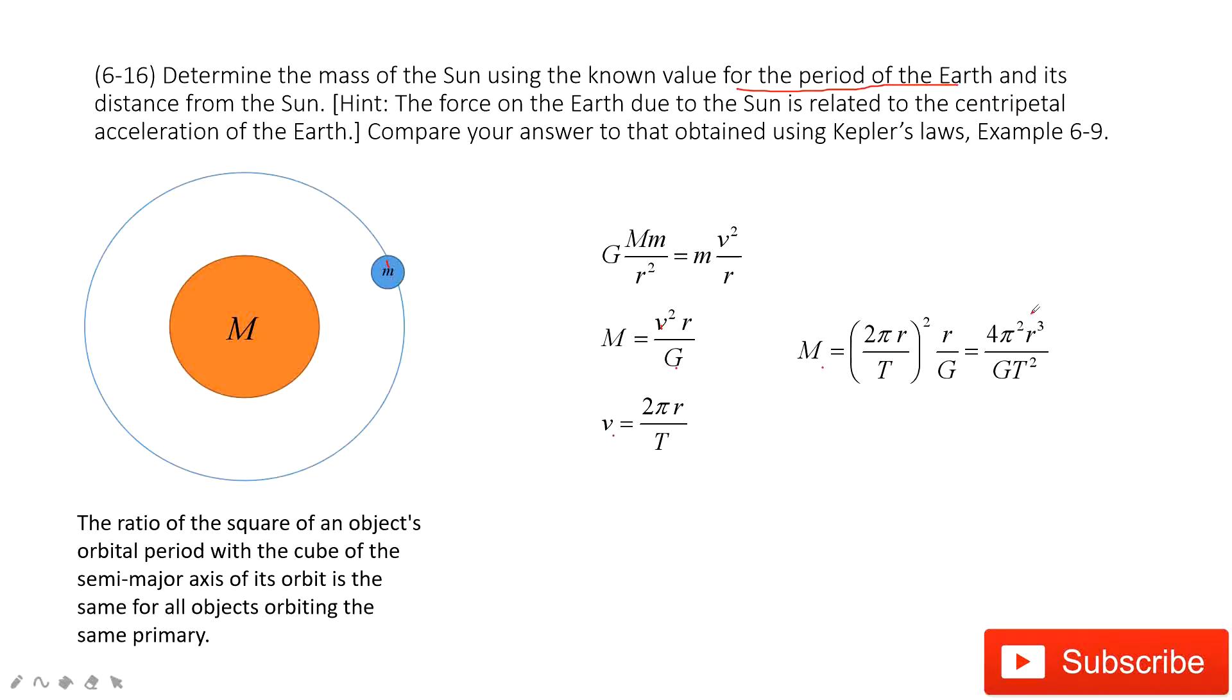Kepler's law tells us this ratio, r cubed divided by t squared, is a constant for the planet. Exactly, you can see r³/t² equals 4π² divided by GM. This is a constant and mass is a constant. Our answer satisfies Kepler's third law.